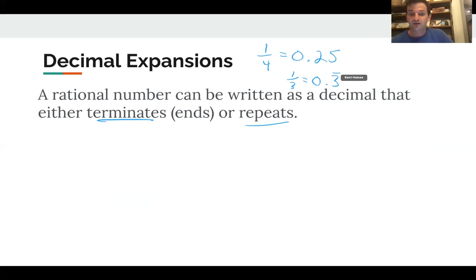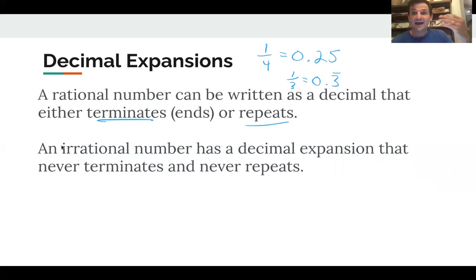But an irrational number has a decimal expansion that never terminates and never repeats. And so, again, another example, the square root of 21. I don't know what it is. It's between 4 and 5. And so I would say, you know, maybe around 4.6. But if I kept going and actually plugged it into a calculator, we find out that it goes on and on and on forever. The decimal never terminates, which means it never ends, and it never repeats.